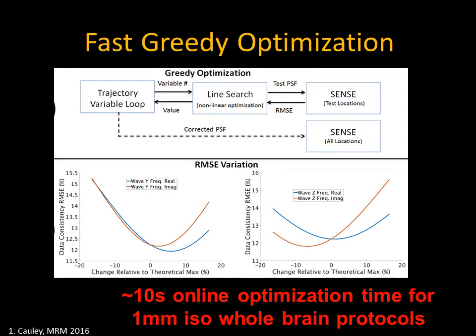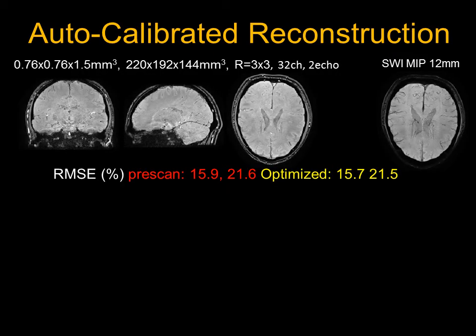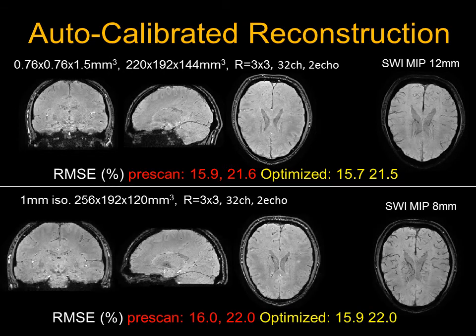In terms of performance, this allows us to optimize in around 10 seconds for a one-millimeter isotropic whole-brain protocol online. Compared to the full pre-scan method which can take tens of minutes, our approach performs at least as well in terms of data consistency error.